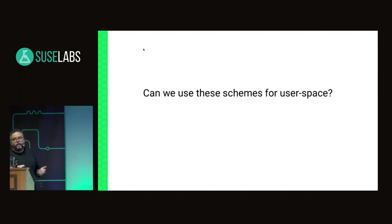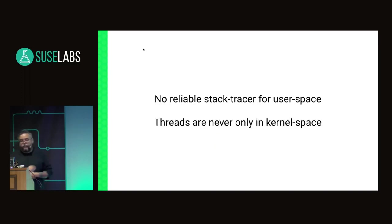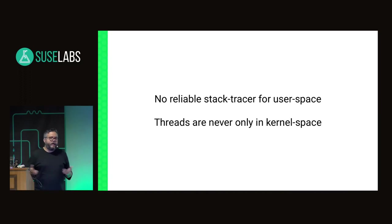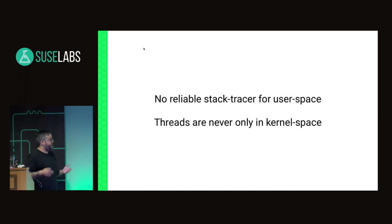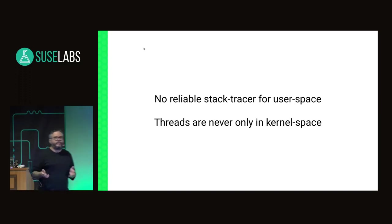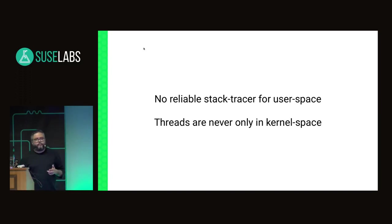Can these schemes be used in user space? Well, of course not. First, we don't have a reliable stack tracer for user space. In the kernel they have something called ORC, but that has not been ported into user space yet, and we're not sure if it's even doable. You cannot just assume we can look at the stack and determine if a given set of functions is running or not. Stack tracing is possible but not 100% reliable, and for a product that wants to prevent downtime, this might not be the best way to go.